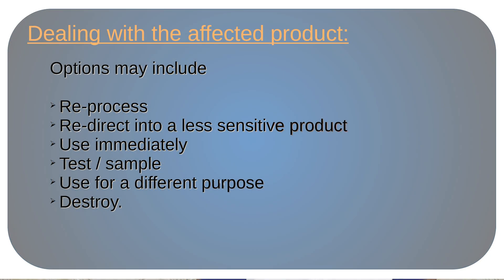Additionally, the options for dealing with an affected product include: reprocessing the product; using it in a less sensitive situation if the violation is not highly critical; consuming it immediately within the allowable window, as in the hot holding example; or destroying the product. All these are options to handle the affected product. That covers the corrective action stage of HACCP.